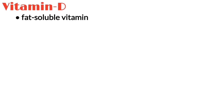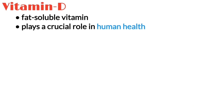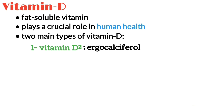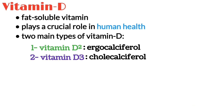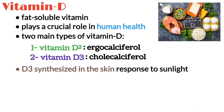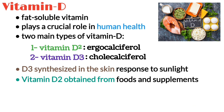Vitamin D is a fat-soluble vitamin that plays a crucial role in various aspects of human health. There are two main types of vitamin D: Vitamin D2, also known as ergocalciferol, and Vitamin D3, which is known as cholecalciferol. Vitamin D3 is synthesized in the skin in response to sunlight exposure, while Vitamin D2 can be obtained from certain foods and supplements.